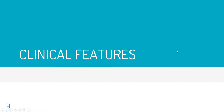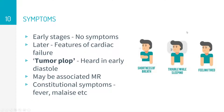In the early stages, symptoms may not be present because the tumor is tiny and doesn't cause hemodynamic compromise. Later, features of cardiac failure may develop, such as breathlessness on exertion, orthopnea, paroxysmal nocturnal dyspnea, bilateral pedal edema, and elevated JVP. On auscultation, a tumor plop is typically heard in the early diastolic phase of the cardiac cycle.